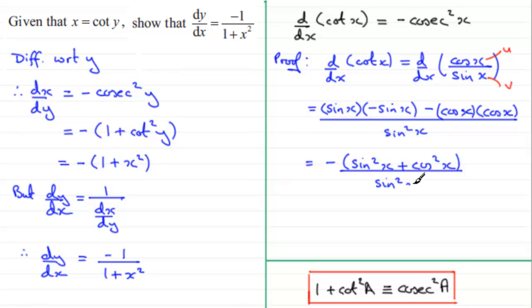Now, you should be familiar with the identity that sine squared x plus cos squared x is equal to 1. So, we end up with minus 1 over sine squared x.